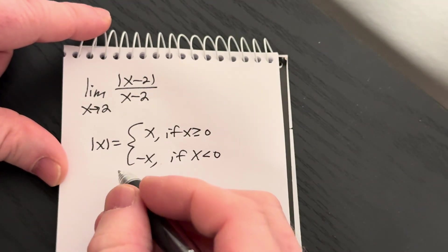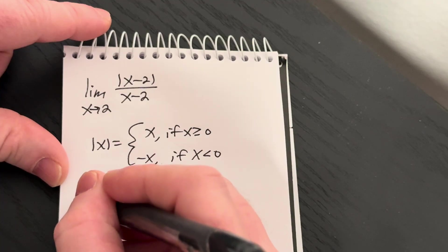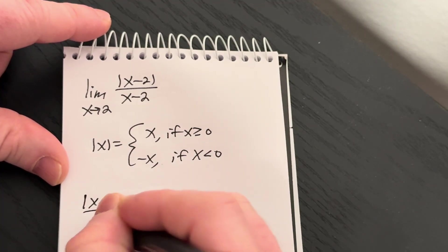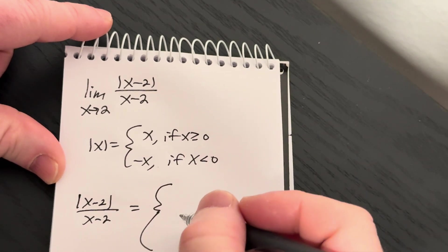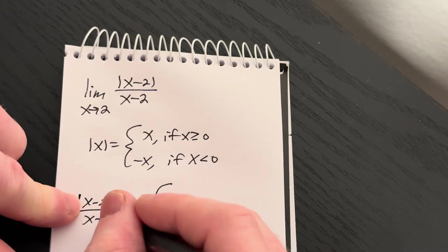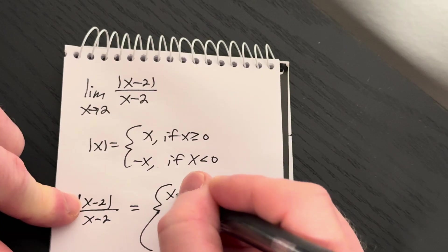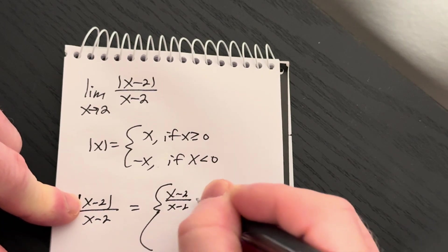So let's apply that to what we have here. We have the absolute value of x minus 2 over x minus 2. I'm just going to apply it to the x minus 2 part. So it'll be x minus 2 over x minus 2, which is 1.